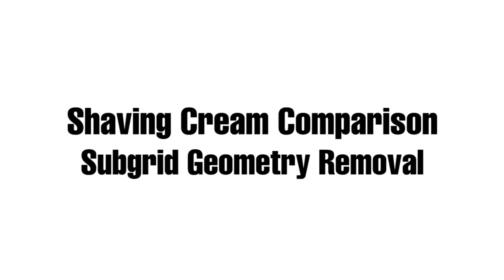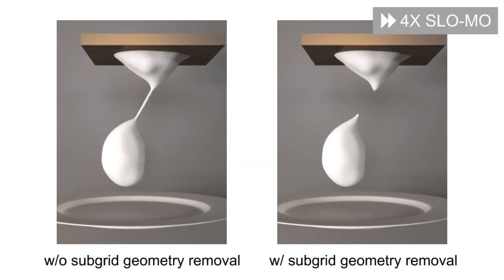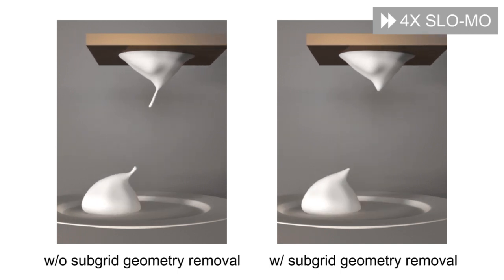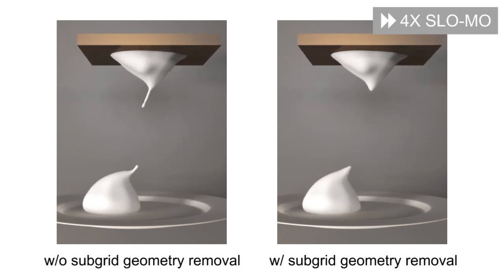With the addition of our simple subgrid geometry removal, we can eliminate the remaining artificially stiff thread-like artifacts, which are caused by under-resolved geometry.